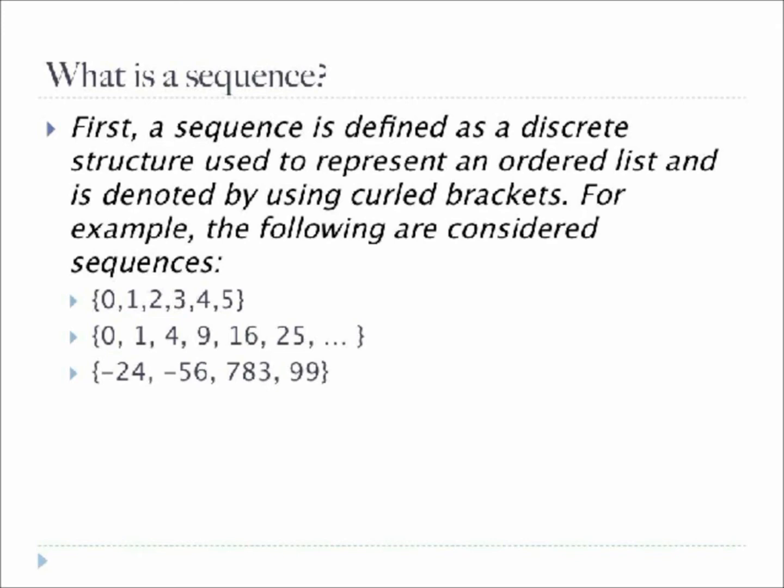As you can see, sequences have a definitive set of numbers known as a finite sequence, or they can have an infinite series of terms noted by an ellipsis like in the second example. Sequence terms can be made of random terms, like in the third example, or they can have a pattern.